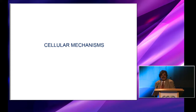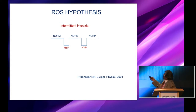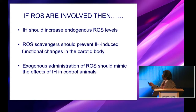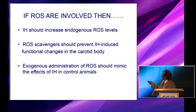What could be the cellular mechanisms underlying the effects of CIH on the carotid body? Intermittent hypoxia is interspersed with periods of re-oxygenation, and we thought that during this re-oxygenation phase there could be an increase in reactive oxygen species, which could be contributing to heightened carotid body activity. If this hypothesis is correct, one should see increased ROS levels in carotid bodies of intermittent hypoxia-exposed rats; second, ROS scavengers should prevent CIH effects; and third, exogenous ROS should mimic CIH effects on control carotid bodies.